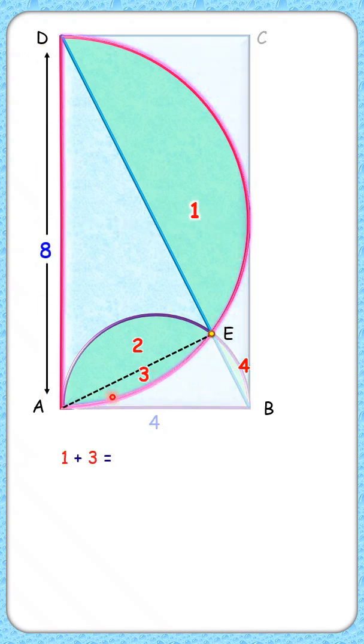So region one plus region three will be area of this semicircle, which is half of πr² or 8π. From this we'll subtract area of this pink triangle to get area one plus three.